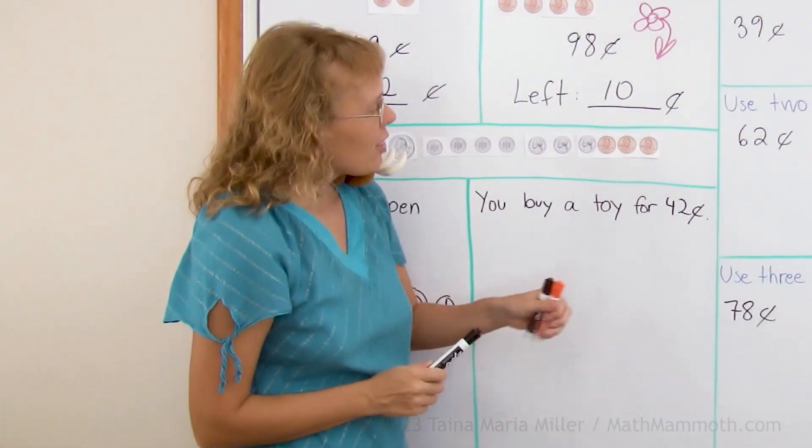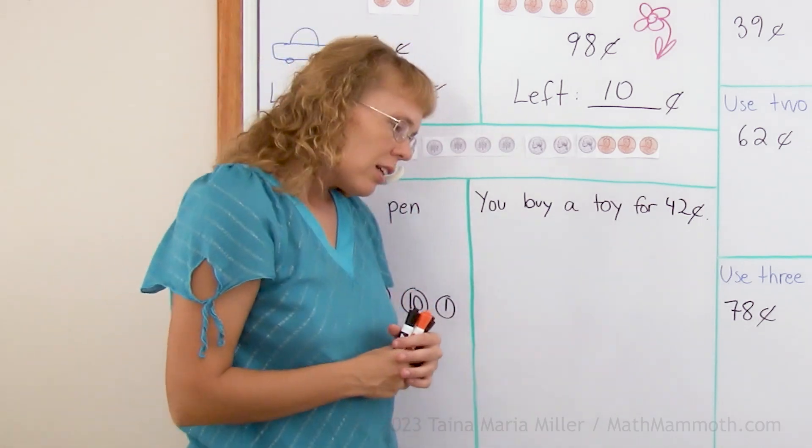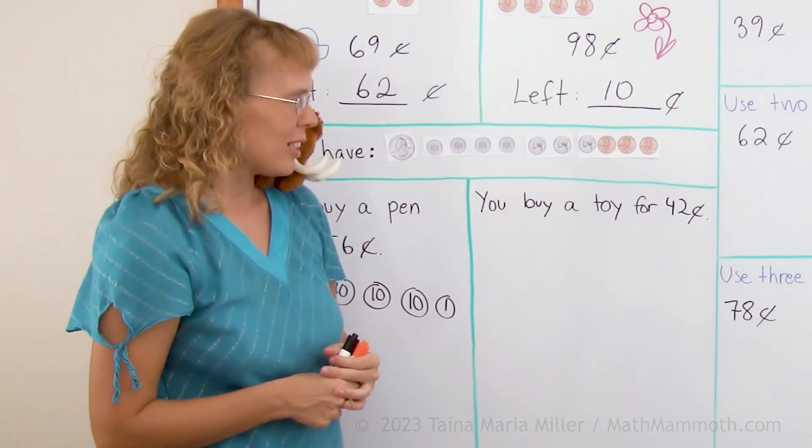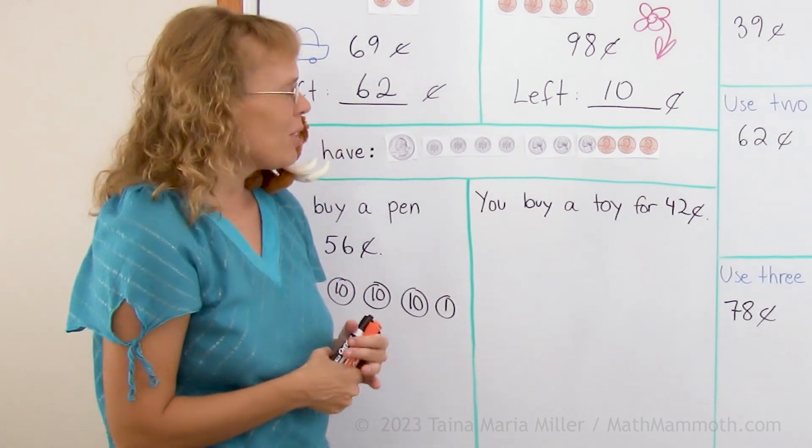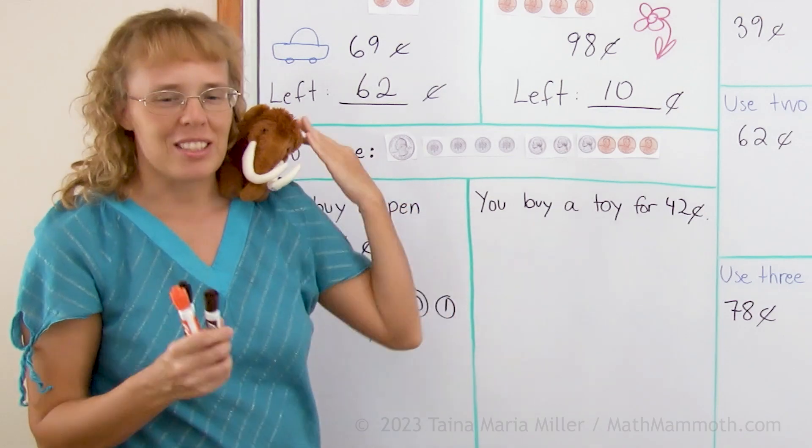You buy a toy for 42 cents. Is that Matthew? Why not a puzzle book? Well, Matthew, puzzle books usually cost more than 42 cents. Except maybe you are at a yard sale and somebody is selling it cheap. Yeah, you can think of it as a puzzle book if you want to, Matthew. He loves puzzles.